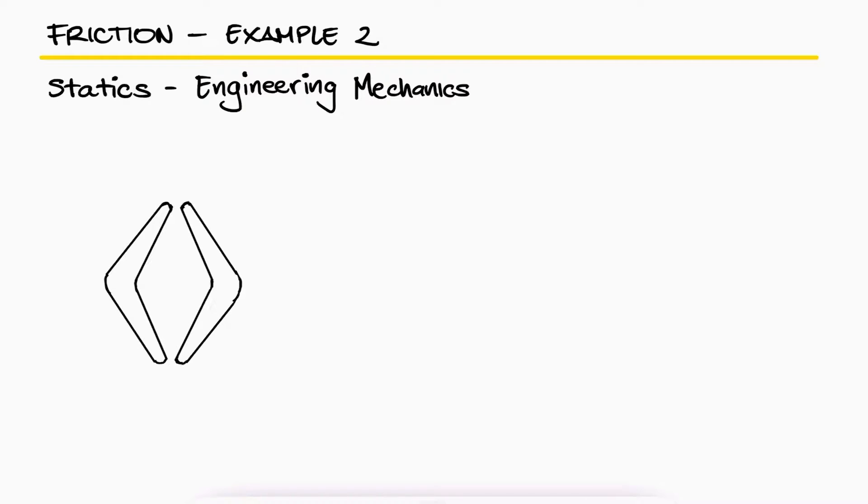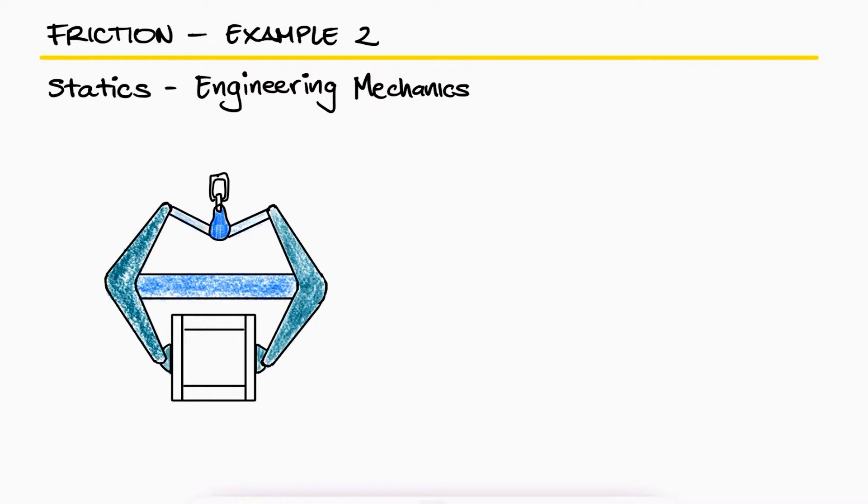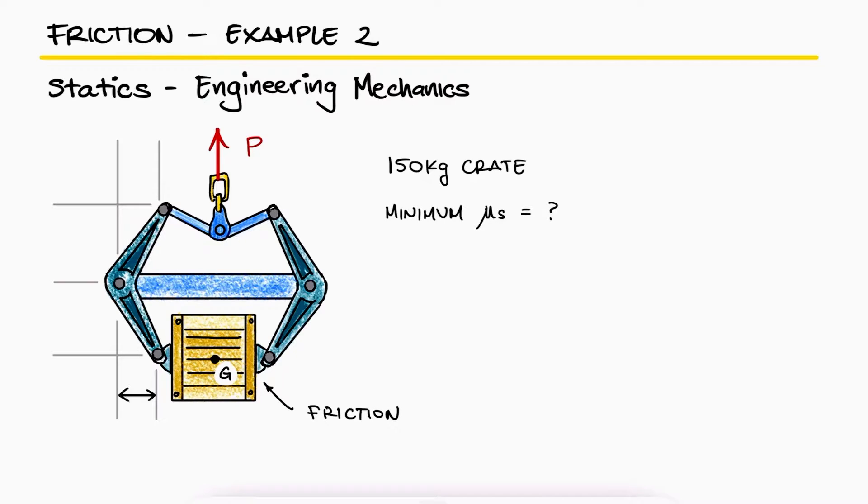The tongs are used to lift a 150 kg crate whose center of mass is at g. Determine the least coefficient of static friction at the pivot blocks so that the crate can be lifted. This is the second example for the friction main video. The links to that 10 minute video and the other 2 minute example videos are in the description below.